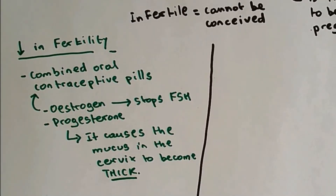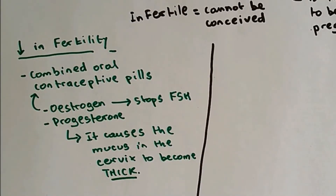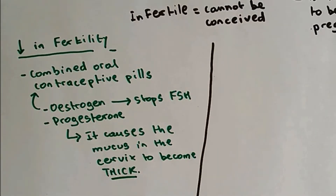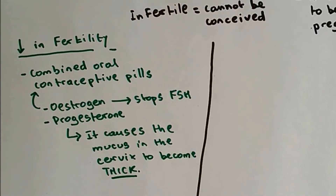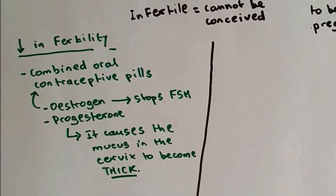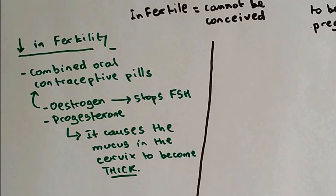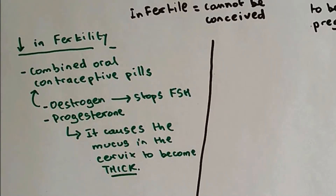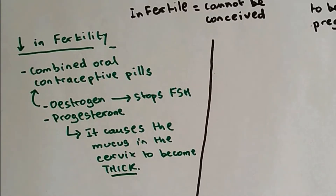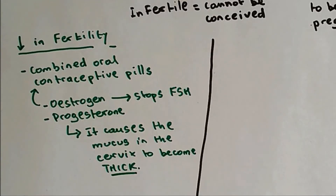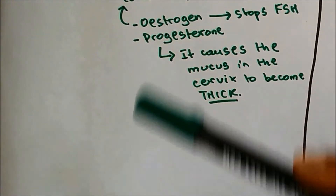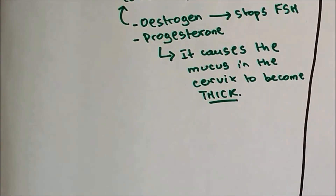Progesterone stimulates the production of thick cervical mucus. If the mucus in the cervix is very thick, the sperm will not swim through it and so will not reach the egg — therefore it will not be fertilized. This is how estrogen and progesterone decrease fertility.